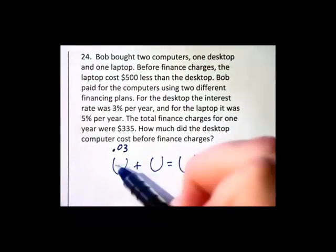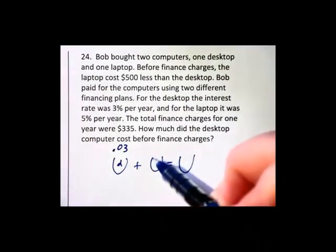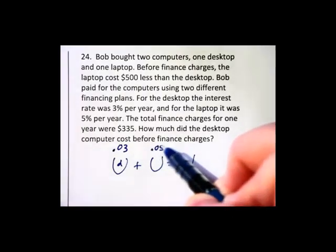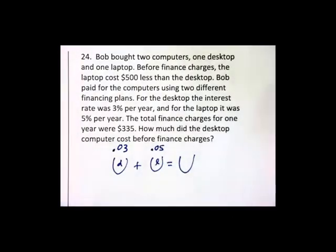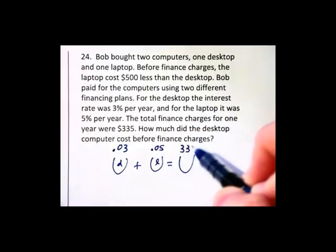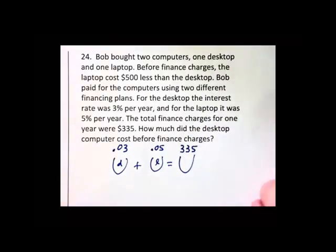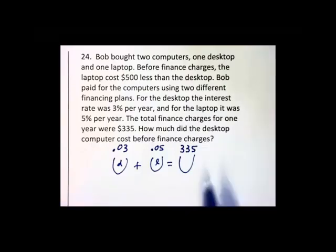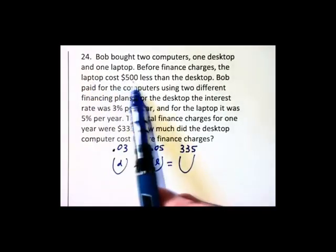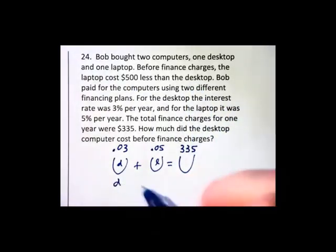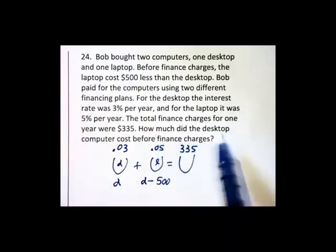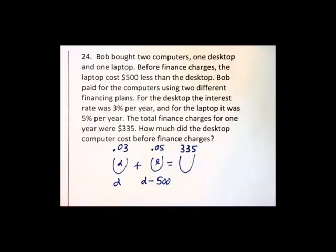That is for the desktop, I'll put a D inside. And 5% will be for the laptop, I'll put a little L inside to remind me what that is. The total finance charges for one year are $335. I'm going to write that $335 at the top. How much did each of these cost? What was the amount? The laptop is $500 less than the desktop, so the desktop is D, the laptop is D minus 500. And it's asking us to solve for the desktop D, so we've actually got the right variable in this problem to begin with.